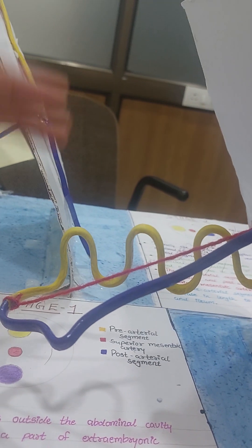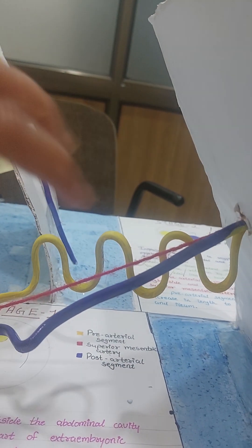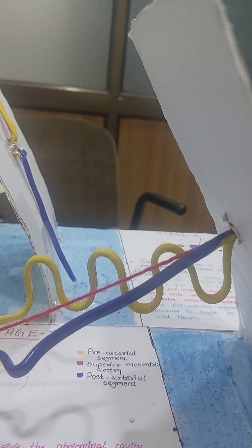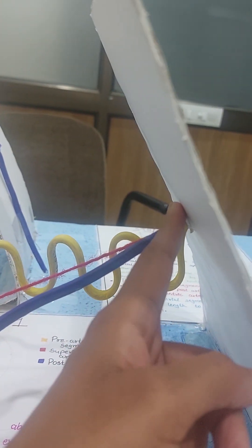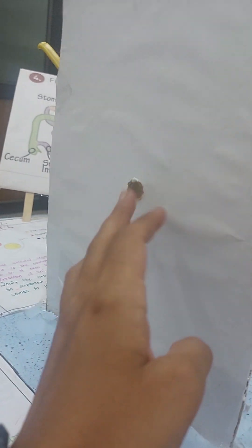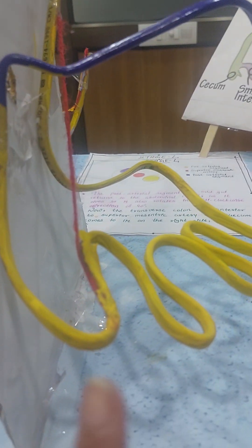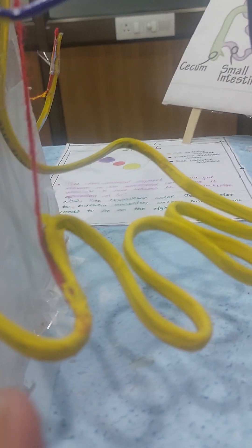Finally, once the intestines have grown and elongated and all the coils of jejunum and ileum have formed, now they all return back into the abdominal cavity through the umbilicus. Here what I have shown is that the umbilicus is empty and all these loops have again returned into the abdominal cavity.